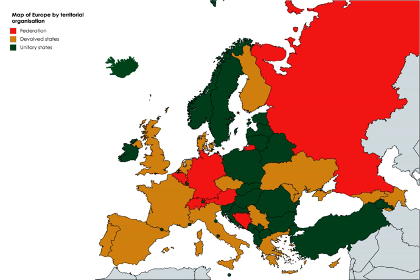Immanuel Kant was an advocate of federalism, noting that the problem of setting up a state can be solved even by a nation of devils, so long as they possess an appropriate constitution which pits opposing factions against each other with a system of checks and balances. In particular, individual states required a federation as a safeguard against the possibility of war.